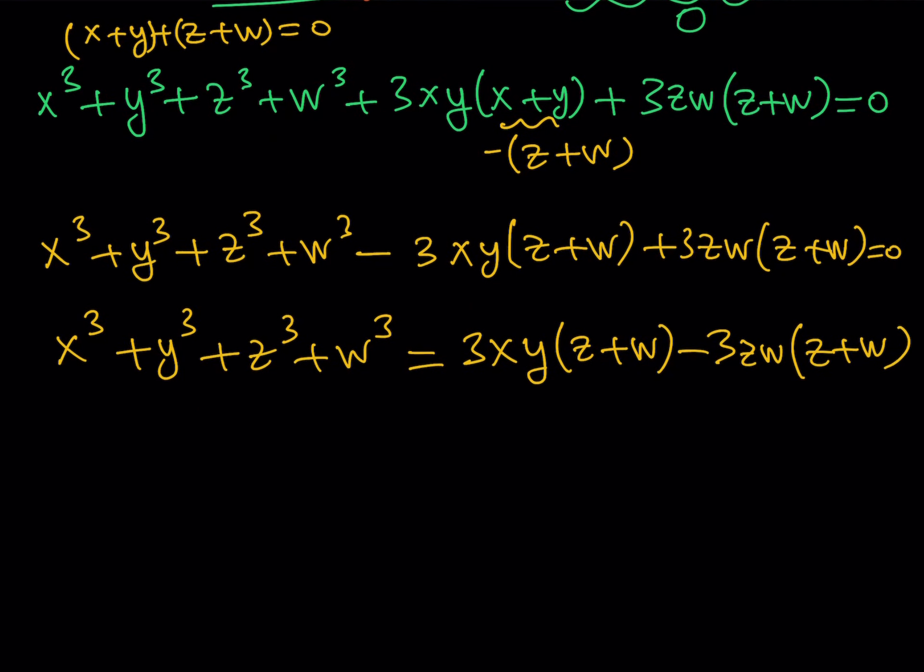Because we're going to negate the second part, it's going to give us 3xy times z plus w minus 3zw times z plus w. We're getting there. At this point, you can substitute and simplify, but I'd like to simplify first. We can take out three times the quantity z plus w, and it's going to give me xy minus zw.